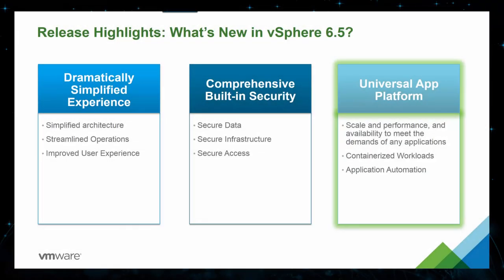The third area of improvement with vSphere 6.5 that we're talking about in this session is universal app platform. vSphere 6.5 provides the scale, performance, and availability to meet the demands of any application for your data center, including supporting containerized workloads that are popular for application developers, as well as providing application automation.